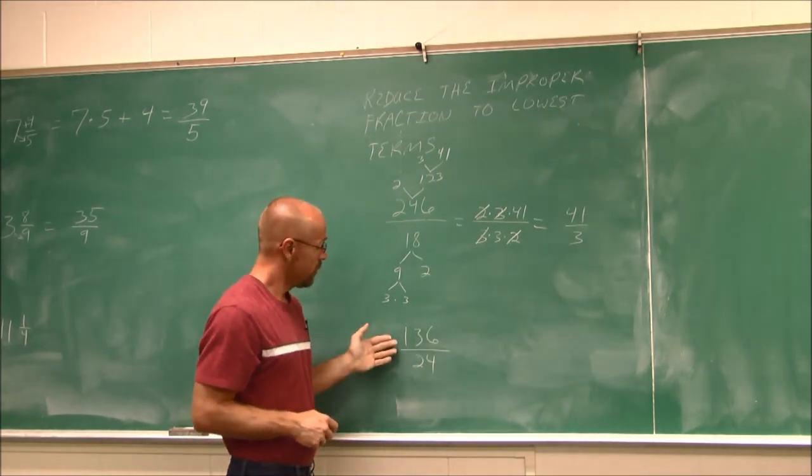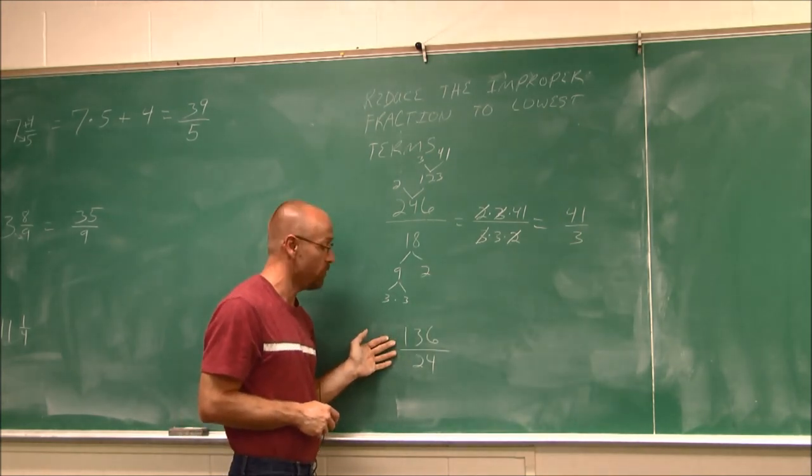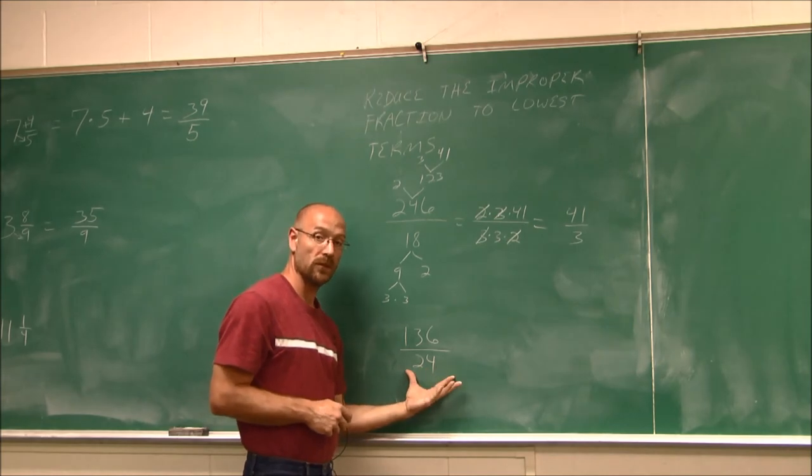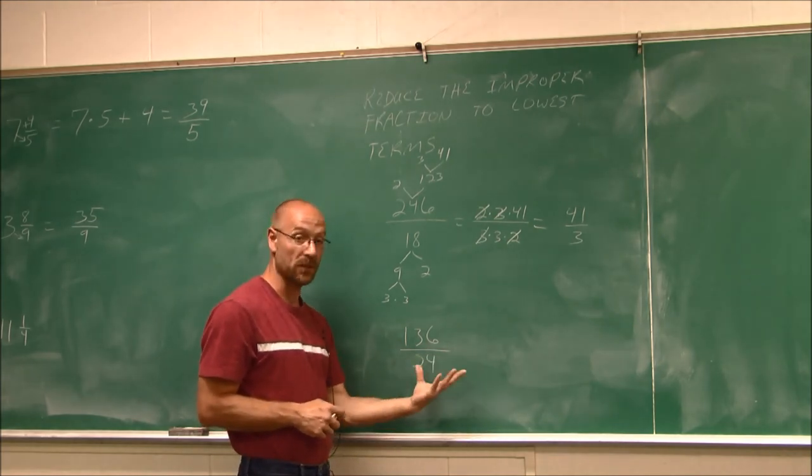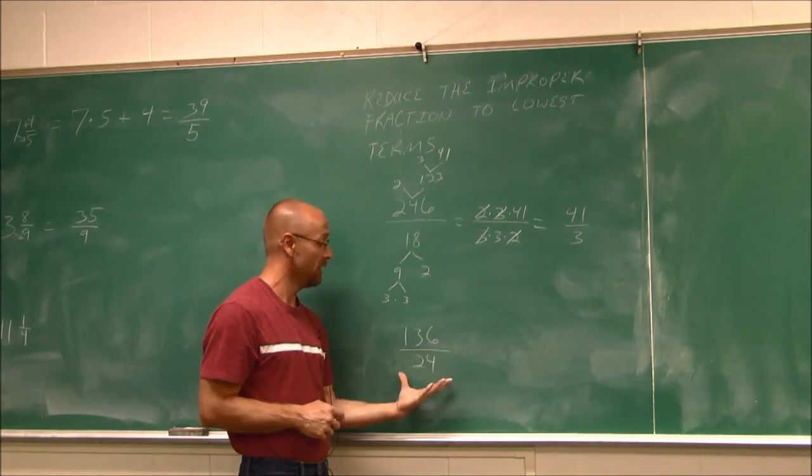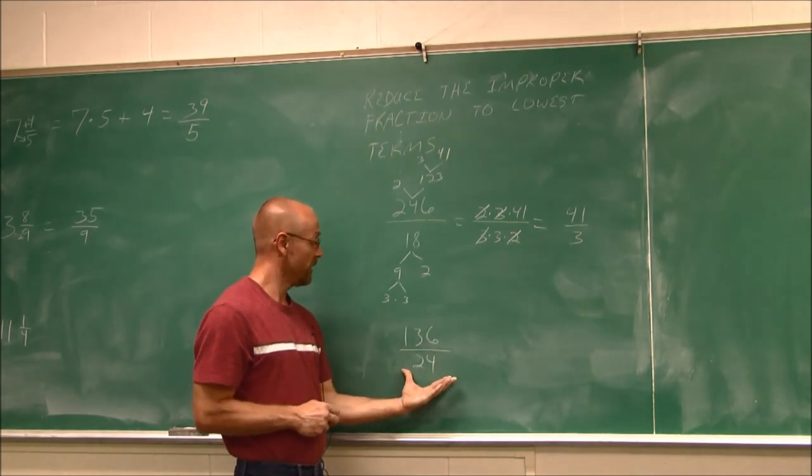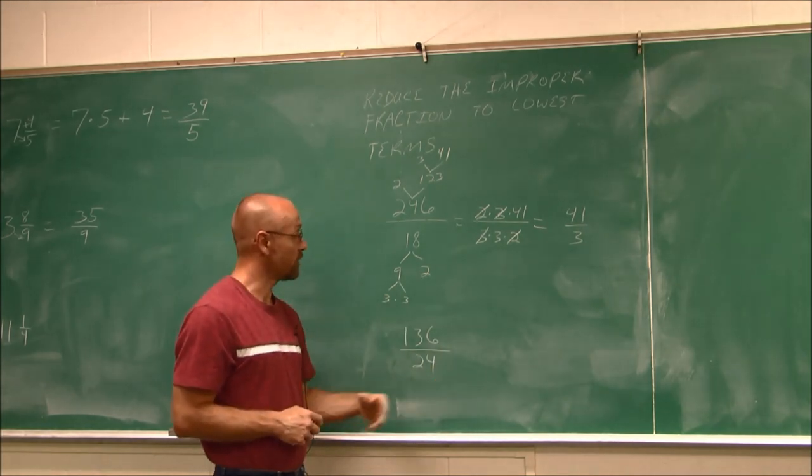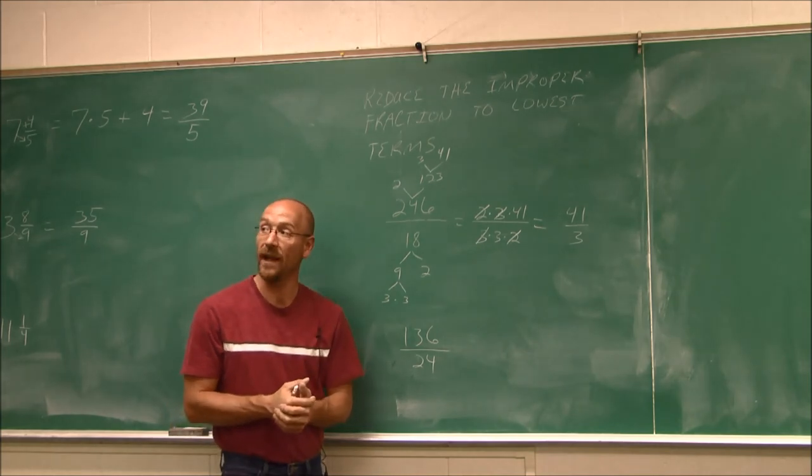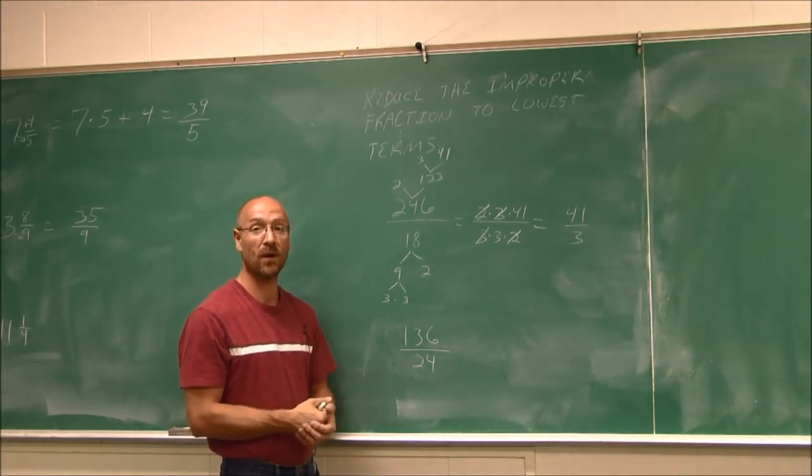So 41 thirds is my improper fraction in lowest terms. I reduced it. Why don't you try this one on your own? Just reduce it. Use prime factorization or division. But I think prime factorization will make it a little bit easier than that division. So this has been Section 2.8, Introduction to Mixed Numbers. Thank you for watching.